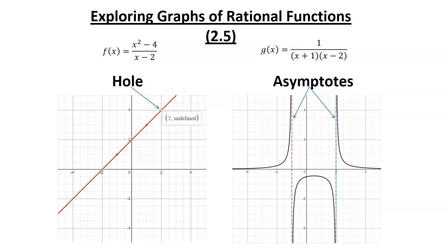Hi everyone, it's Mr. Hamilton here. This video is about exploring graphs of rational functions. We're going to define what holes and asymptotes are, and then look at the equations and determine what causes holes and what causes asymptotes. This follows from Explore the Math in section 2.5 in Nelson's Functions 11 for Ontario. You can see the investigation questions in the link below.